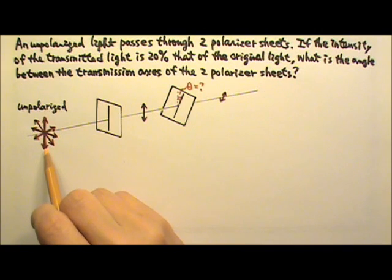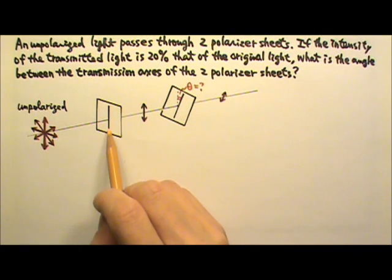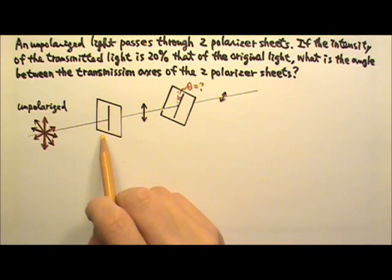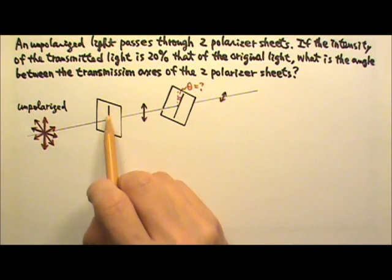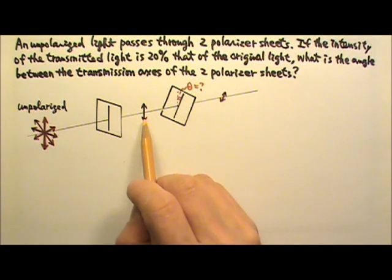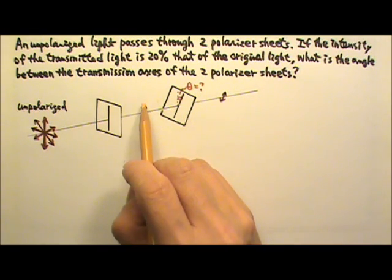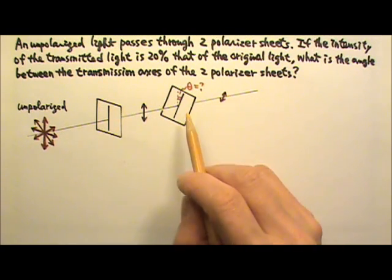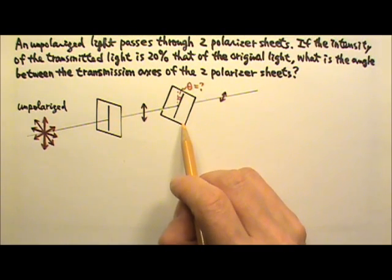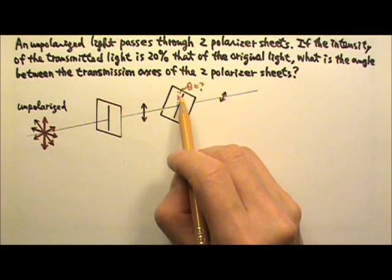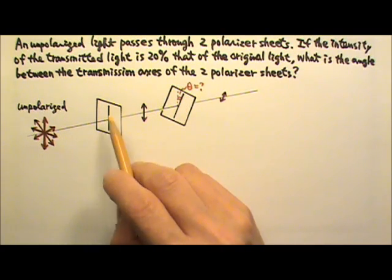So the incoming light is an unpolarized light. At first it goes through one polarizer, let's say the transmission axis is in this direction, so the light becomes polarized after that first polarizer. And then it goes through a second polarizer that is at an angle theta to the first one.